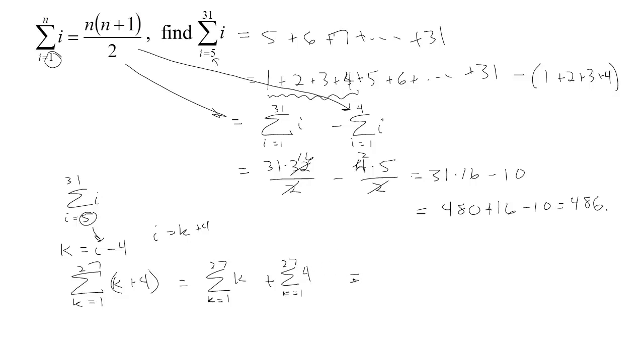Now each of these can be found quickly from specific formulas for these types of series. So let's see, in this case we're just adding up the first 27 integers, and so we know from this formula that you're going to get n times n plus 1. 27 plus 1 is 28, all over 2. And then here, if you add up 4 27 times, you're going to get 4 times 27.